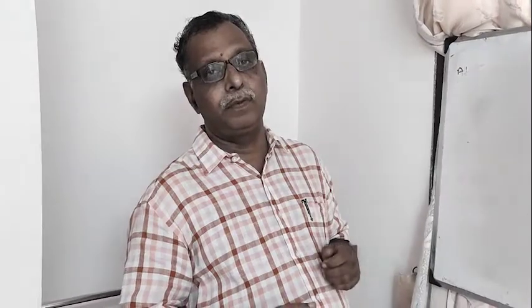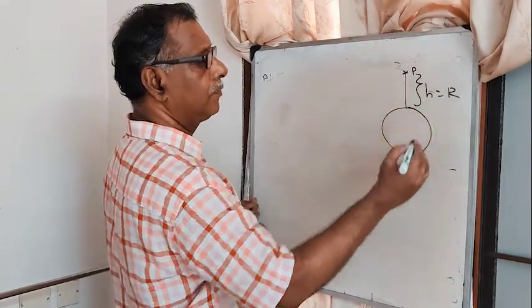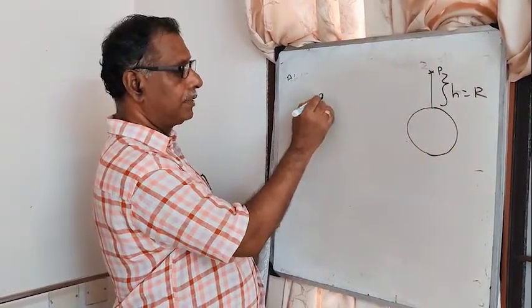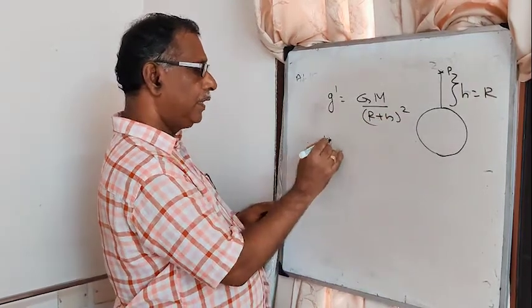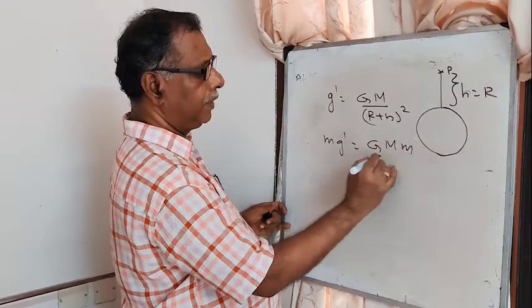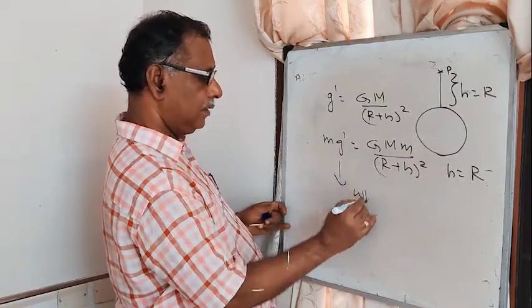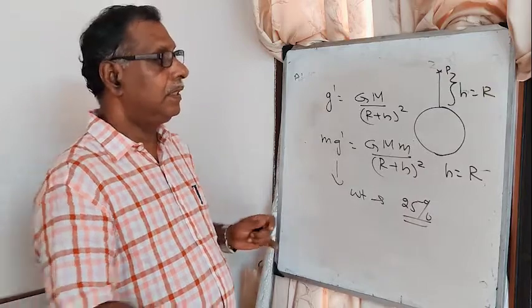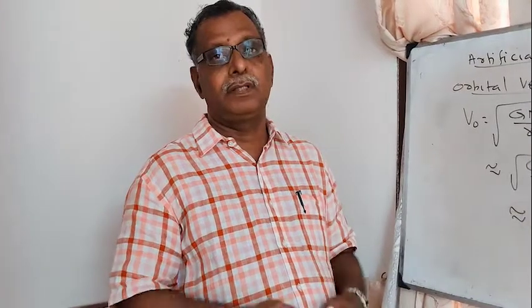Consider a point P at a height H = R (equal to the radius of the earth) above the surface. The acceleration due to gravity g' = G·M / (R + H)². When H = R, the weight becomes 25% of the weight on the surface of the earth.